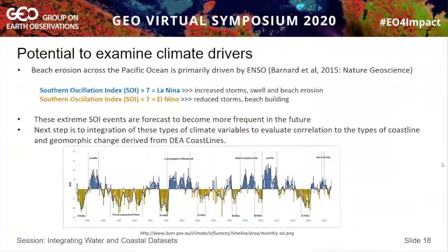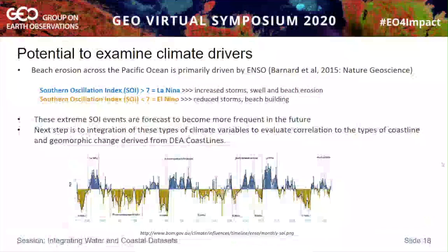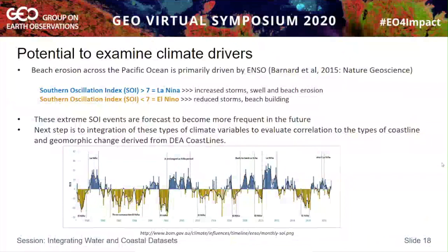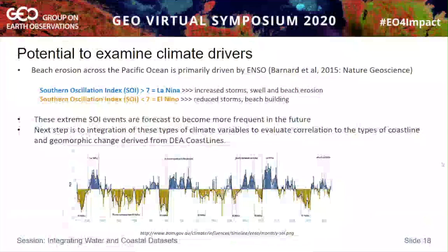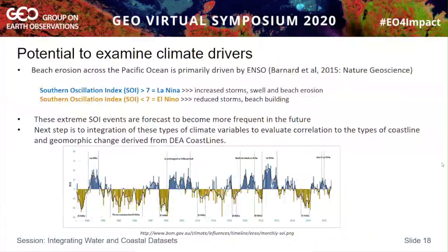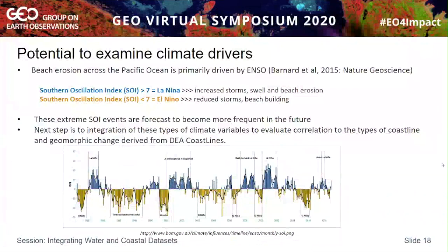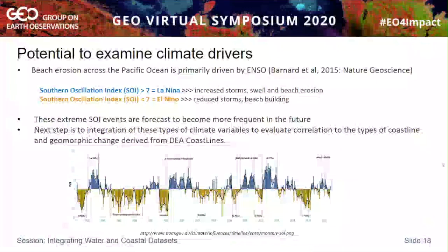Moving into the future, we're examining whether we can link different climate drivers to our data. Beach erosion across the Pacific Ocean is driven by ENSO — the Southern Oscillation Index, which affects La Niña and El Niño events, has different effects on beaches. These events are forecast to become more extreme and frequent. We want to see if there are correlations between erosion and accretion patterns and these climate drivers, which if occurring more often, might help us understand and anticipate what will happen to beaches on the eastern coast in the future.